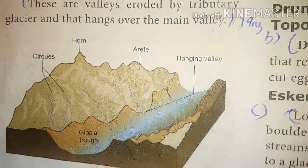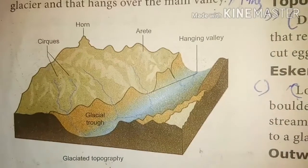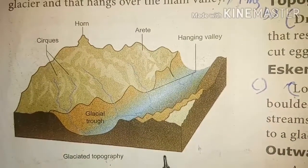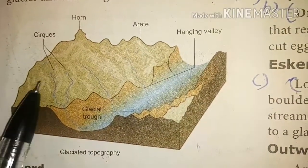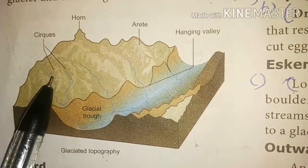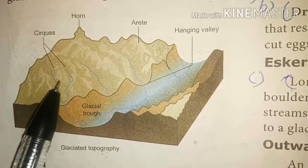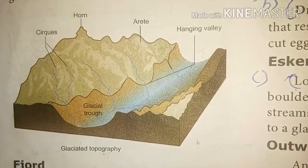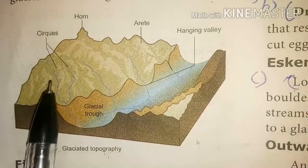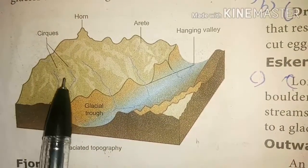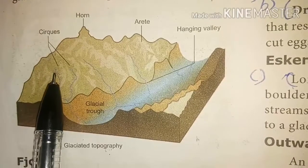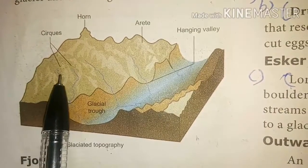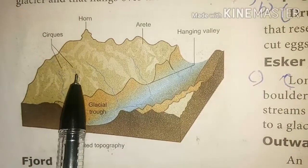Hanging valleys are valleys eroded by a tributary glacier that hang over the main valley. Look at the picture — glaciated topography. In the cirque, both sides are eroded, so here in the middle a depression is formed, and this side is like an armchair.